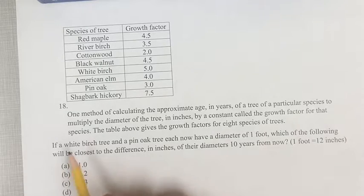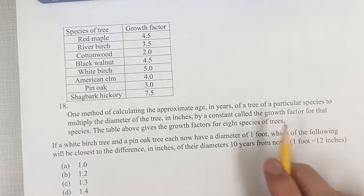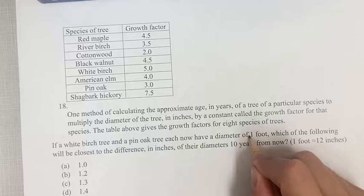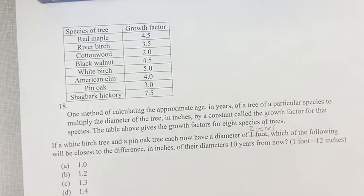We are given in this table the growth factors for eight species of trees. We are told that we have a white birch tree and a pin oak tree that now have a diameter of one foot. And the rest of this problem we're dealing in inches, so let's just say right now they're both 12 inches since that's equal to one foot. We're asked which of the following will be closest to the difference in inches of their diameters 10 years from now.